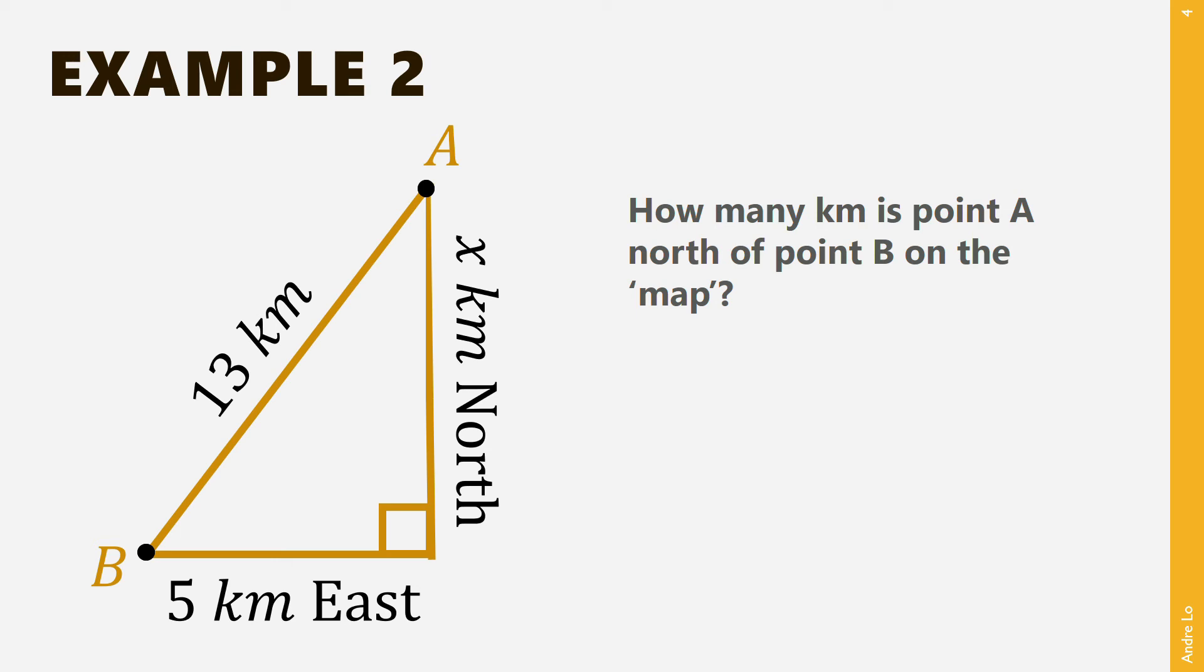So, here the hypotenuse is 13km, and the perpendicular sides are x and 5km long. Hence, applying Pythagoras' theorem, x squared plus 5 squared equals 13 squared. Remember that we always need to write in brackets Pythagoras' theorem right afterwards, as this is the reason for the formula.